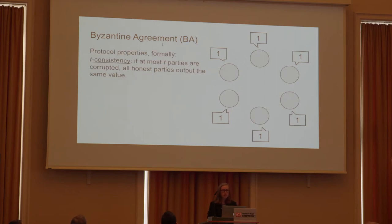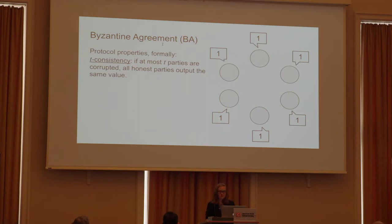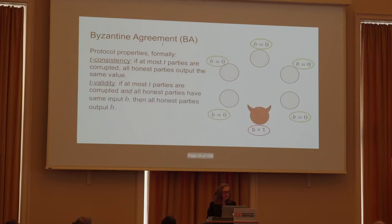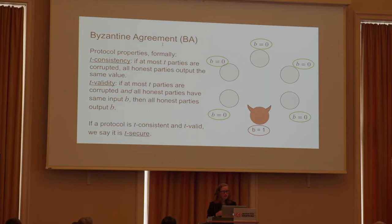To be more formal about what we want our protocol to achieve, we define the following security properties. First, we have T-consistency, which says that if at most T parties are corrupted, then all honest parties output the same value. By itself that's not a difficult problem — you could just say all honest parties output zero. So we add T-validity: if at most T parties are corrupted and all honest parties have the same input, then all honest parties output that value. A protocol that is T-consistent and T-valid is called T-secure.